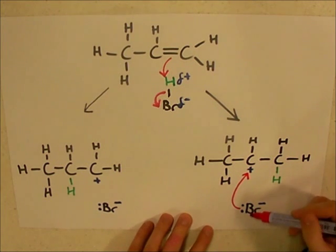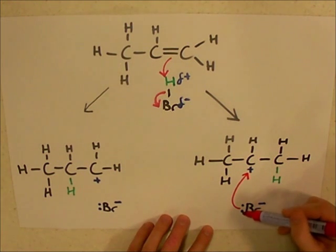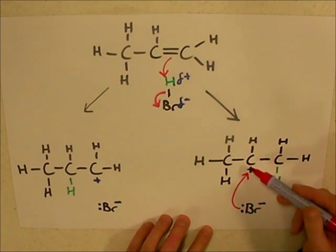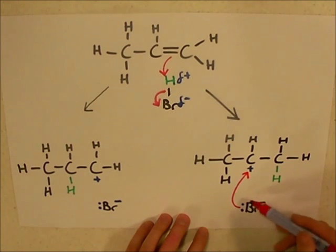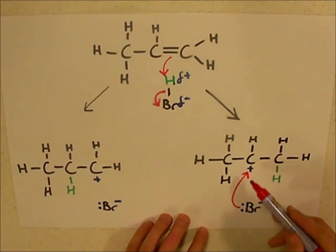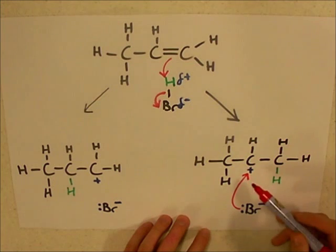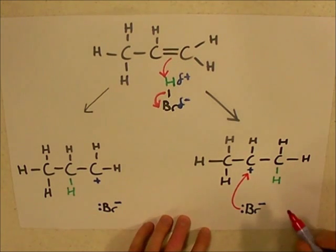It's really important in an exam that when you draw the curly arrows, that they come from this lone pair of electrons here, and clearly go to the carbon with the positive charge. So, here we've had an attack of this bromine anion onto this carbocation intermediate. It's called an intermediate because it's not the final product.